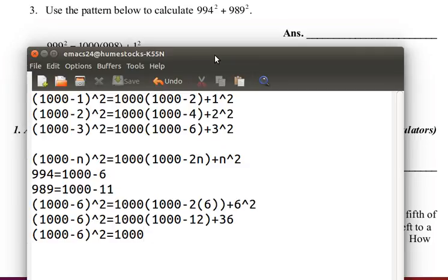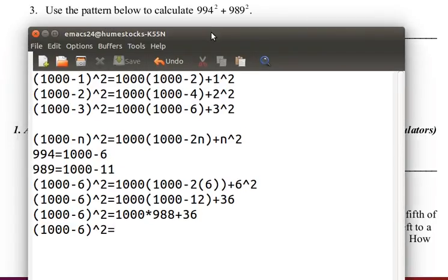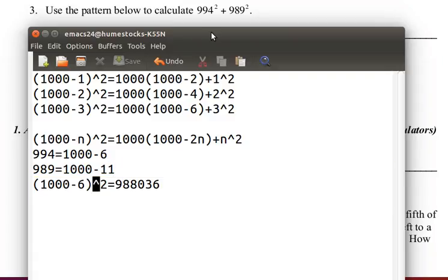1000 minus 12 is 988. You should probably do that somewhere on paper if that's hard for you, but I can do that in my head. Now, 1000 times 988 is 988,000, plus 36 is 988,036. So, we have 994 squared equals 988,036.